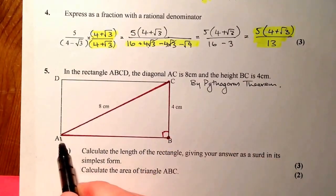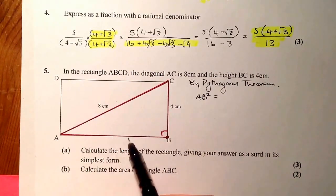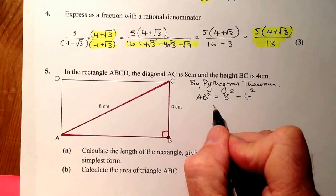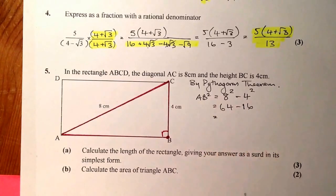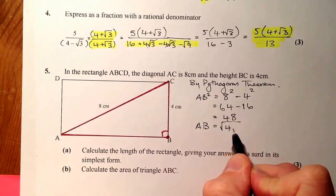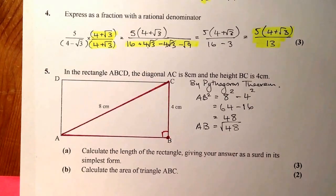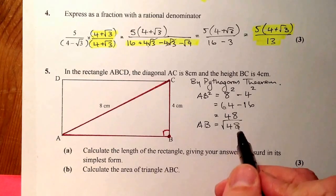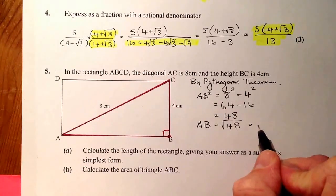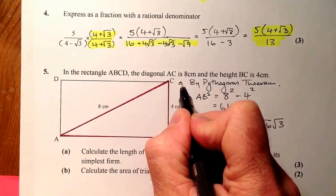Setting up Pythagoras' theorem: AB squared equals 8 squared minus 4 squared. Squaring those numbers gives 64 minus 16, which is 48. So AB equals root 48. I've been asked for the simplest surd form — root 48 equals root 16 times root 3. Taking the square root of 16 gives 4, so AB equals 4 root 3.